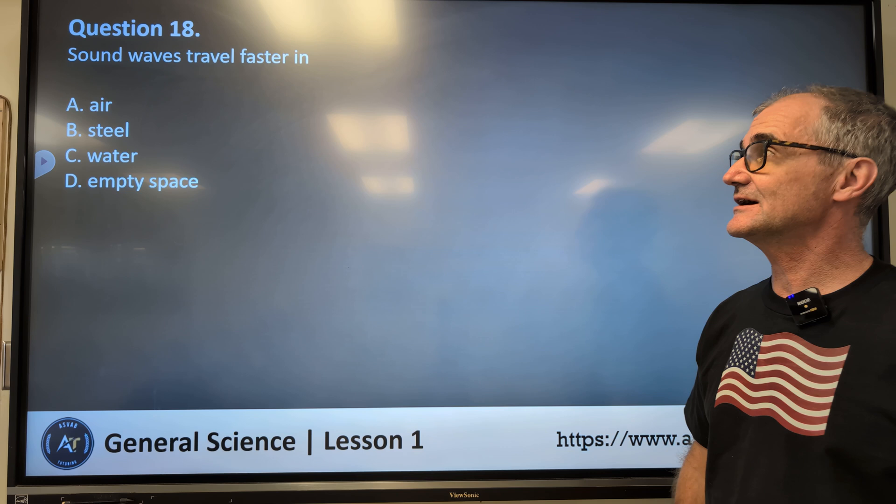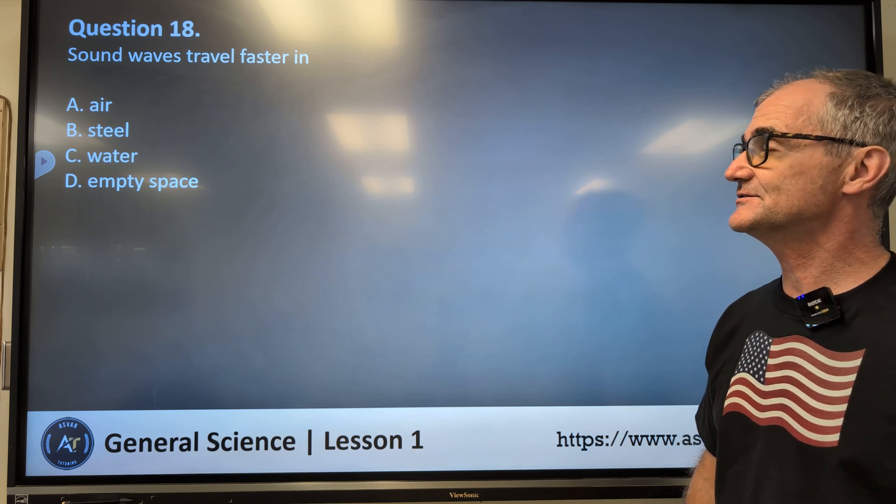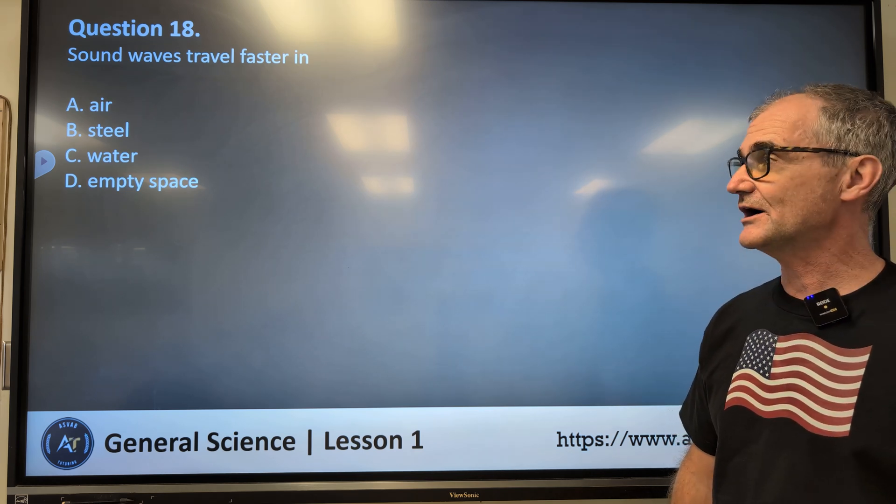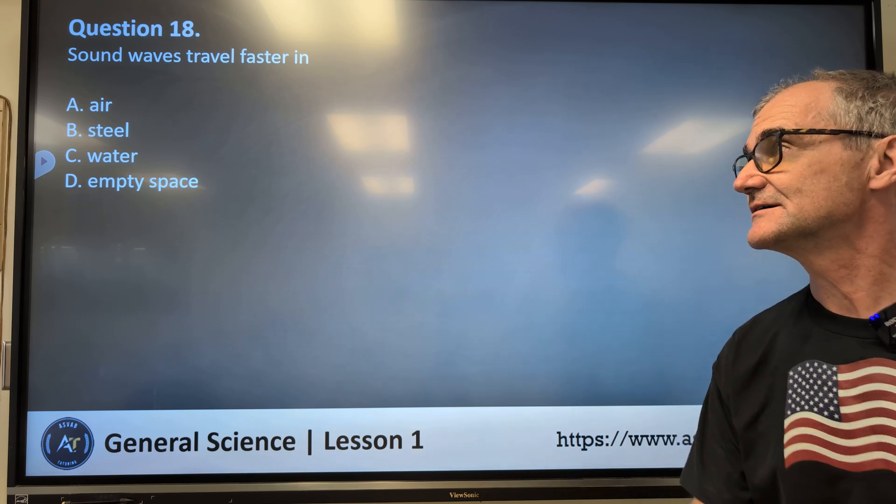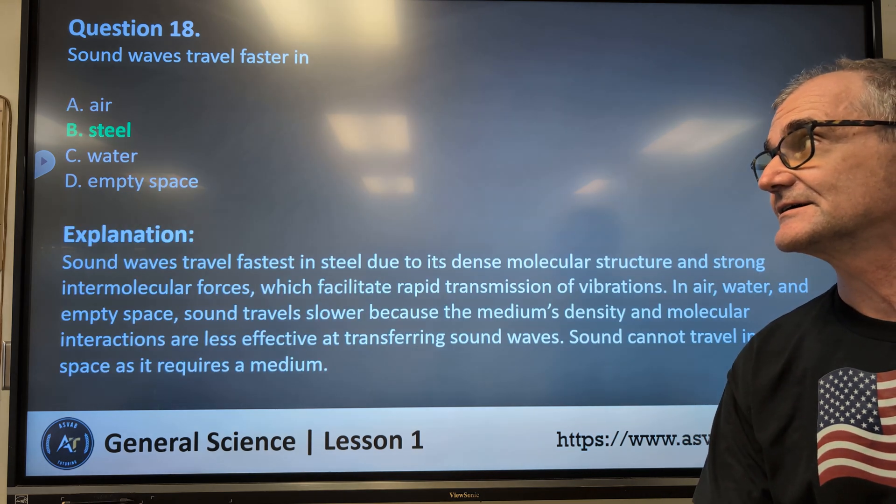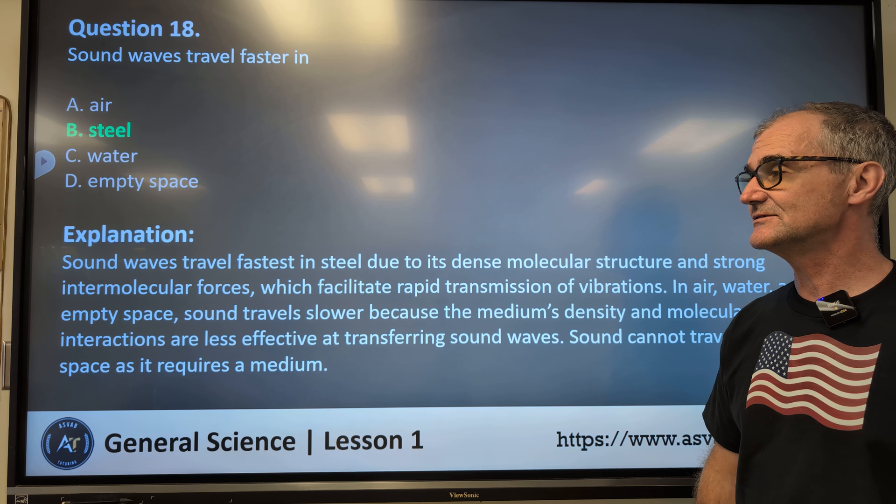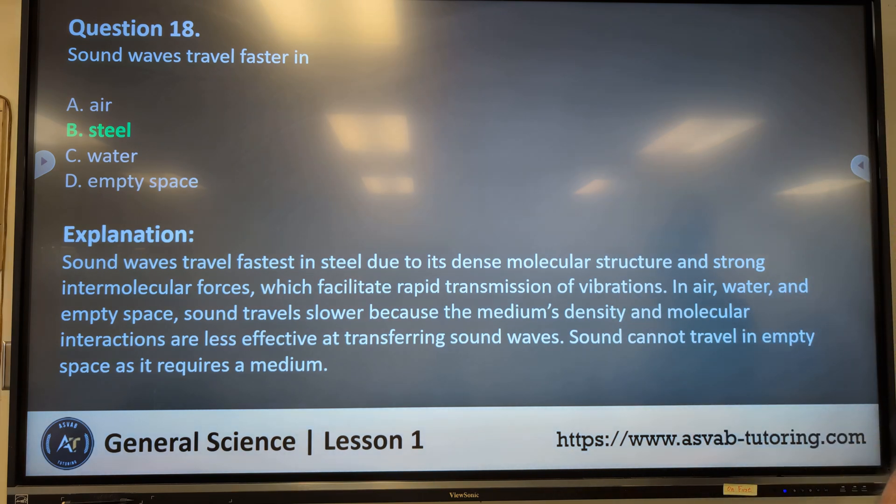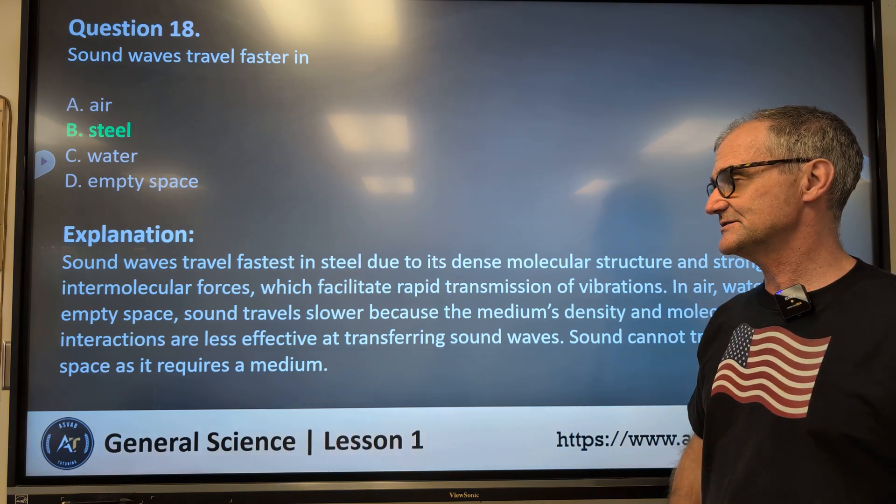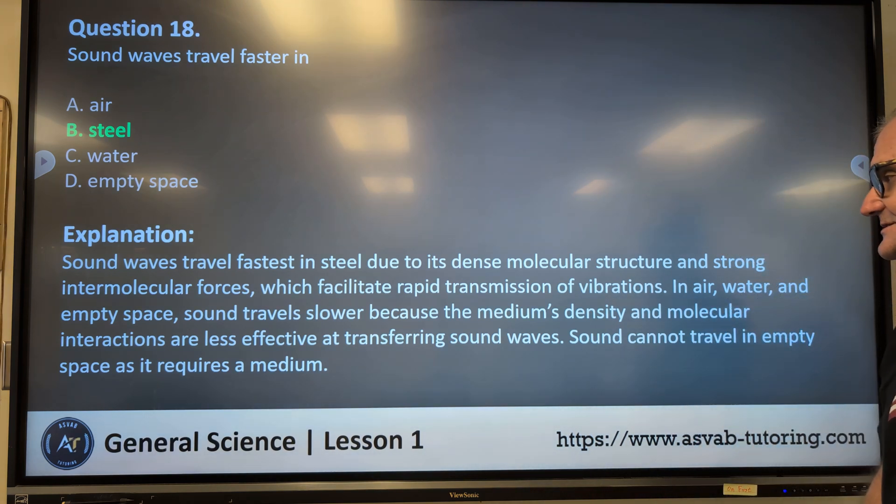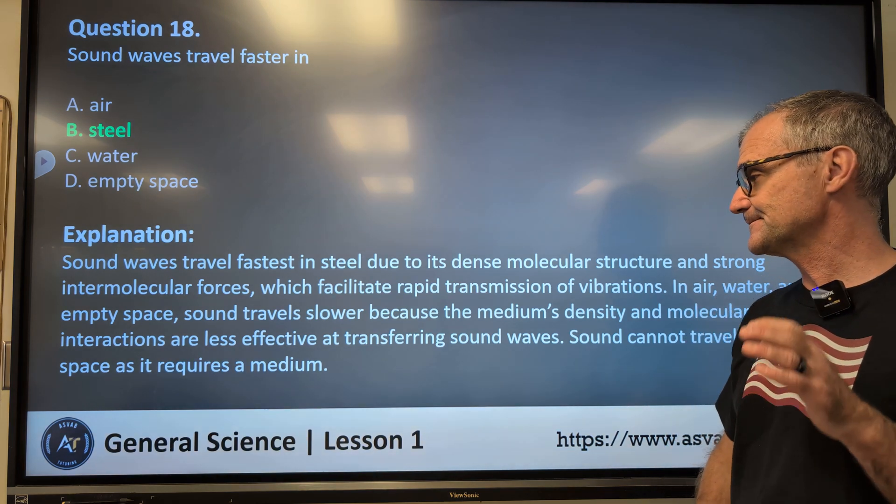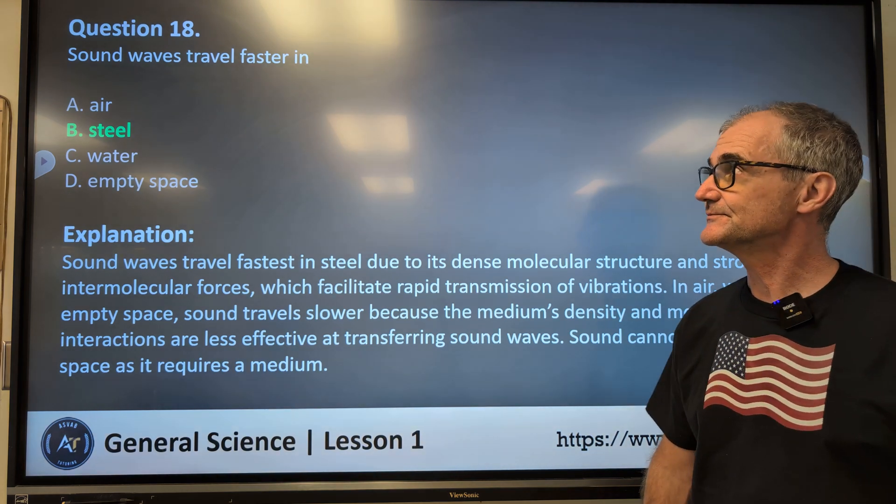Number 18. Sound waves travel faster in air, steel, water, empty space. Sound waves travel faster in steel due to its dense molecular structure and strong intermolecular forces, which facilitate rapid transmission of vibrations. In air, water, and empty space, sound travels slower because the medium's density and molecular interactions are less effective at transferring sound waves.